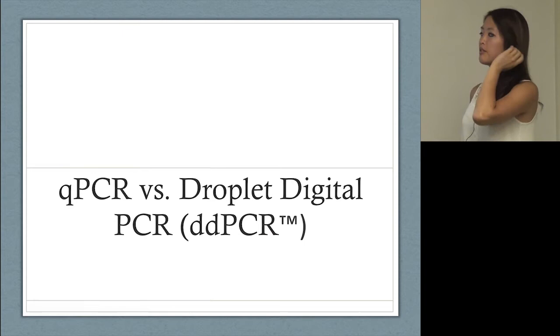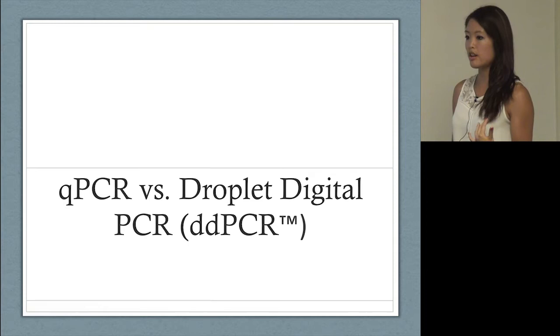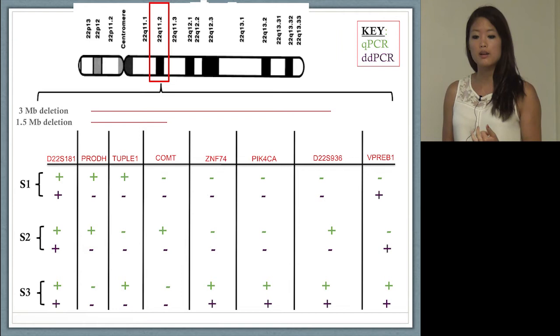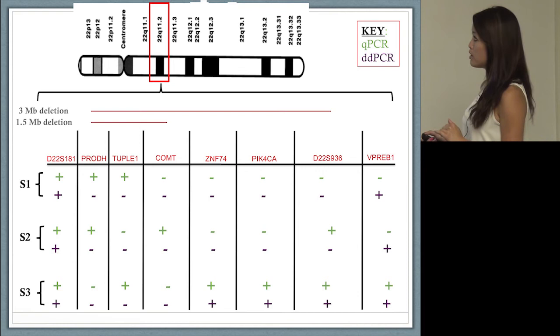A question I get really frequently is QPCR versus DDPCR and why does QPCR not work for us. Before I ran DDPCR, I had run some of my samples using QPCR to determine their CNV status. This is the 22Q region again, and I have in red the eight assays that I've used.